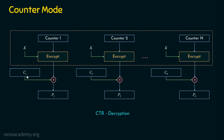For decryption, the ciphertext is given as input and we get the plaintext back. Counter 1 is given to the same encryption function — there is no separate decryption function needed, because C1 XOR with something gives P1 means P1 XOR with the same thing gives C1. This part is common for both encryption and decryption. For decryption, the same sequence of counter values is needed: counter 1 with key K gives output XORed with C1 to recover P1; counter 2 with key K gives output XORed with C2 to recover P2, and so on.